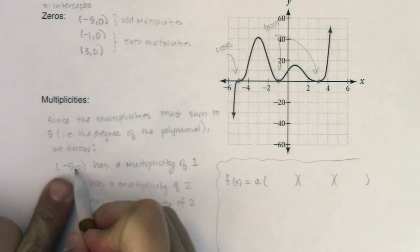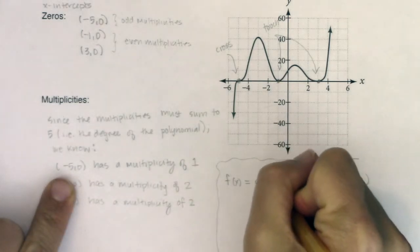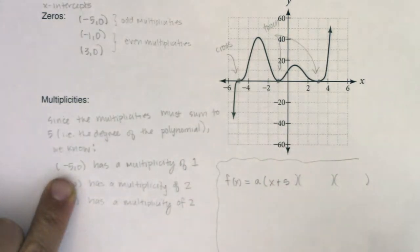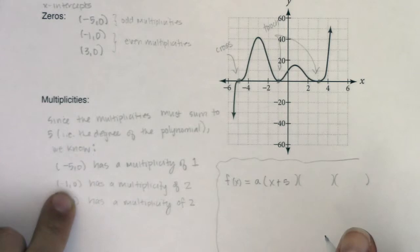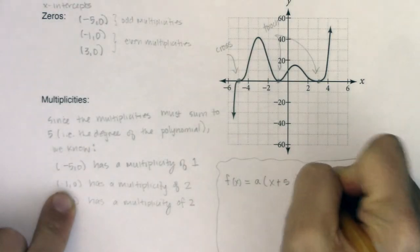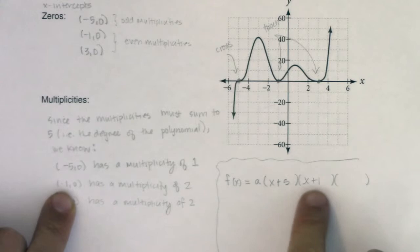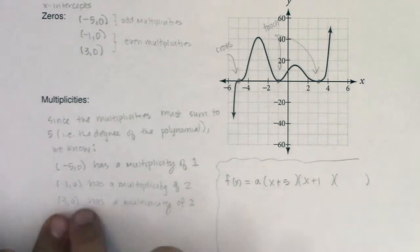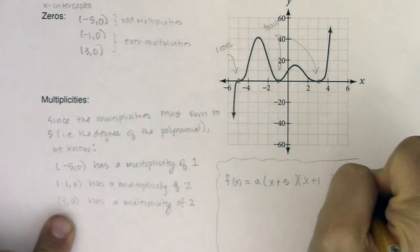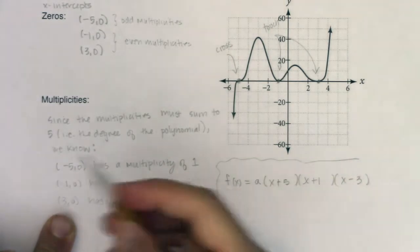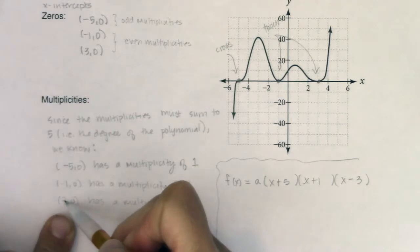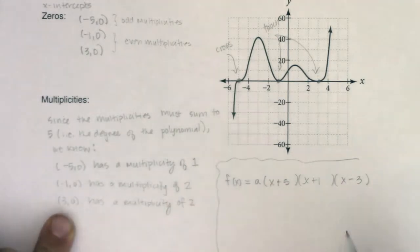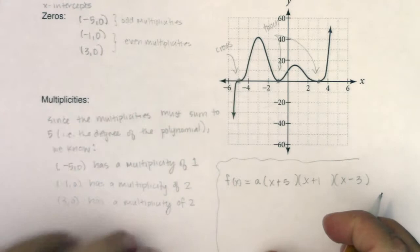If negative 5, 0 is an x-intercept, that means x plus 5 must have been a factor. If negative 1, 0 was an x-intercept of this polynomial, then I know x plus 1 must have been a factor because that's what would be zeroed out by the value of negative 1. And similarly with 3, we would have x minus 3. It's always of the form (x - h), where h is your x-intercept, or the x-coordinate of your x-intercept.